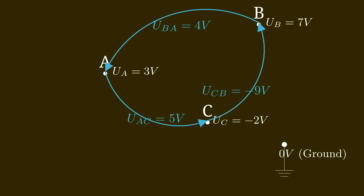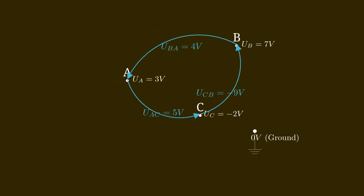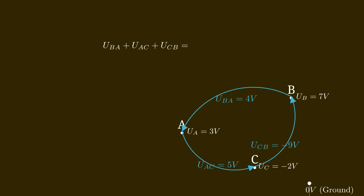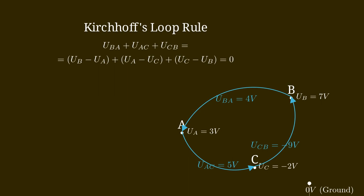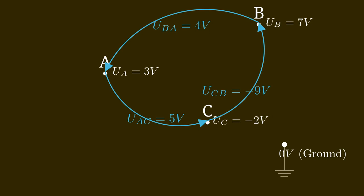Of course we can always change the direction of an arrow and also flip the sign of the voltage. So instead of a voltage from B to C we can measure the voltage from C to B, which in our case would be minus 9 volts. If we sum up all these voltages in a loop — UBA plus UBC plus UCB — we get a total of zero. This is just a result of the fact that the electric field is a potential field. Each point in space can be assigned a certain potential. This is Kirchhoff's loop rule. As a side note, this rule can be violated if we have a changing magnetic field, but that would be a video for another day.